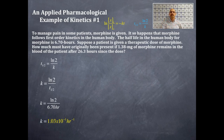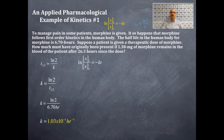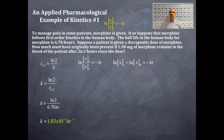Now we're going to use the integrated first-order rate law. We need to do a little rearranging because we're asked to solve for the initial amount — the initial concentration, the initial dose. We're solving for x sub-naught, x sub-zero, which is the initial concentration.